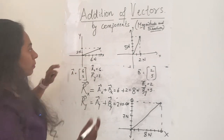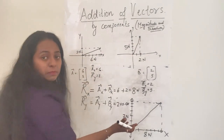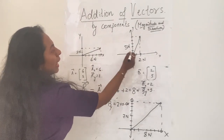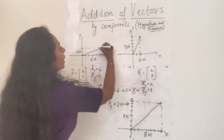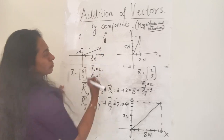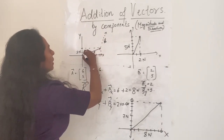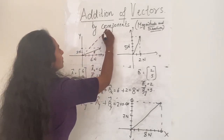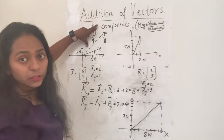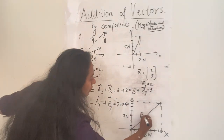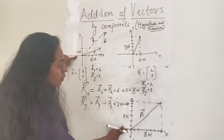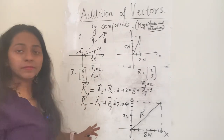Let me verify this graphically. If I put vector B tail-to-tip with vector A, vector B goes something like this and this is my A vector, and the resultant vector should come out like this. Is this resultant vector the same? Yes, it is exactly the same, so what I have done is correct. I got my resultant vector.